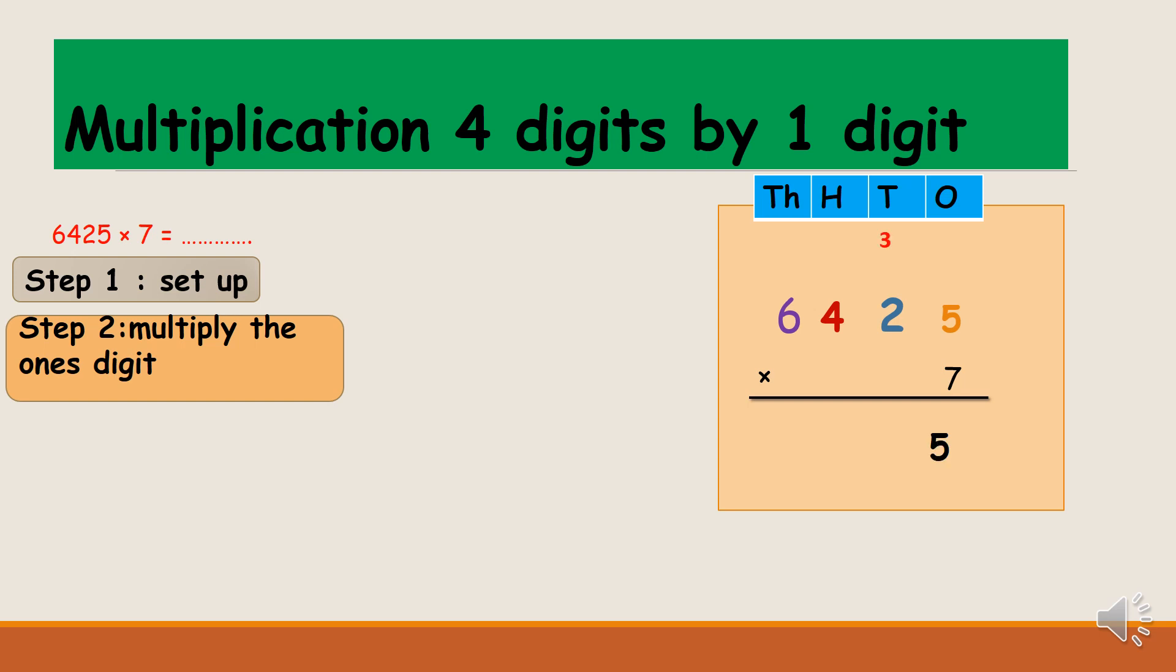Now after multiplying the ones digit, we will multiply the tens digit. Seven times two is 14. Don't write the answer now. Look at the top—I have a three, so 14 plus three, the answer is 17. Also, 17 is a double digit, so I put seven down and one at the top of the hundreds column.